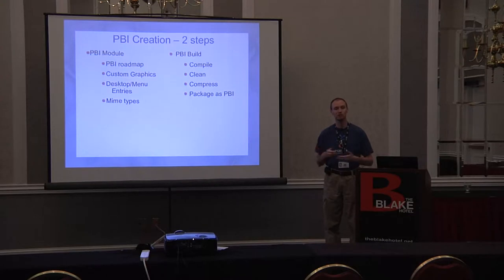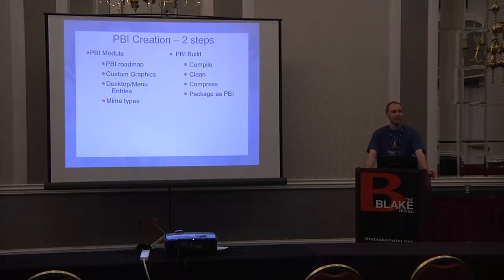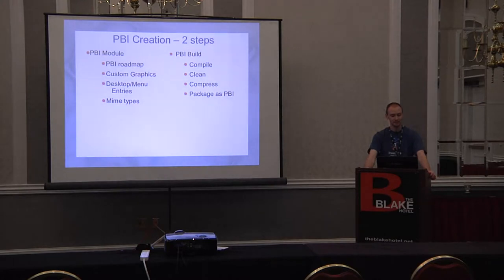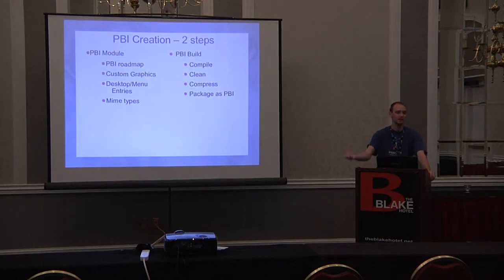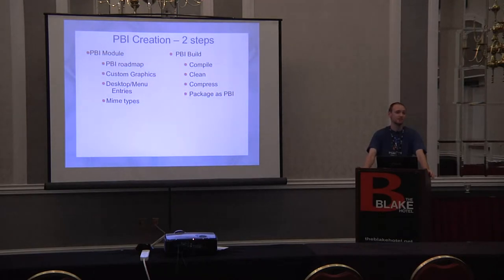Now let's talk about how to create your own PBIs. The PBI system consists of two different pieces. The first is what's called the PBI module — your roadmap for how to build the PBI. It contains all the instructions for what program you're going to build, what version it is, what the program author is, whether the program author has a website. You can also put in custom graphics — special icons used for the program, such as the Firefox icon for a Firefox PBI. You can also place desktop and menu entries, and finally MIME types for specific file extensions using XDG-compliant MIME types.